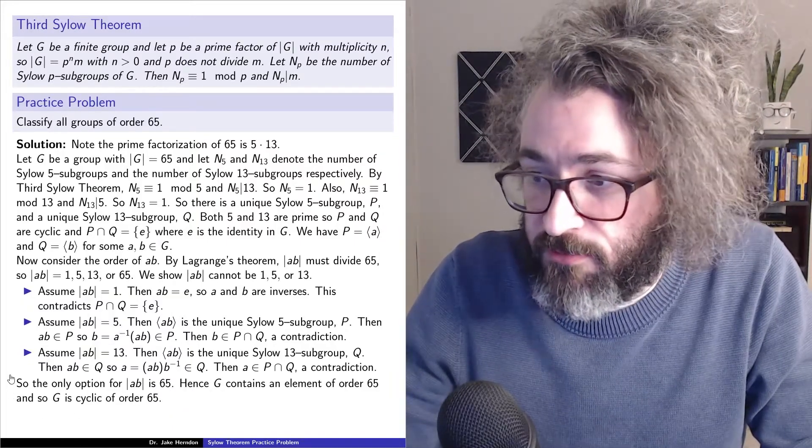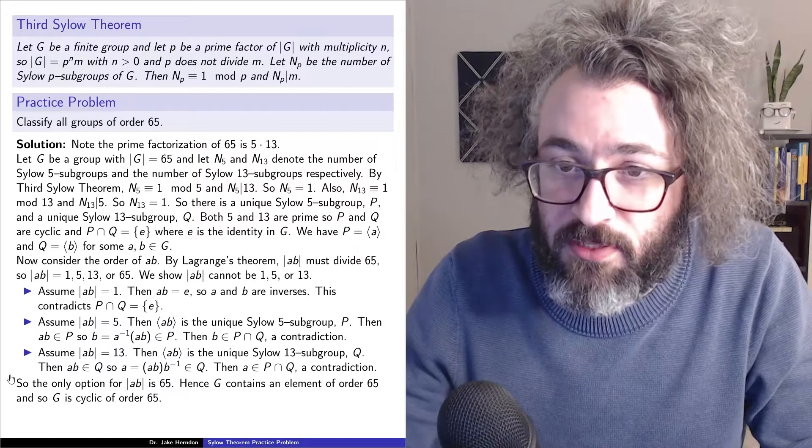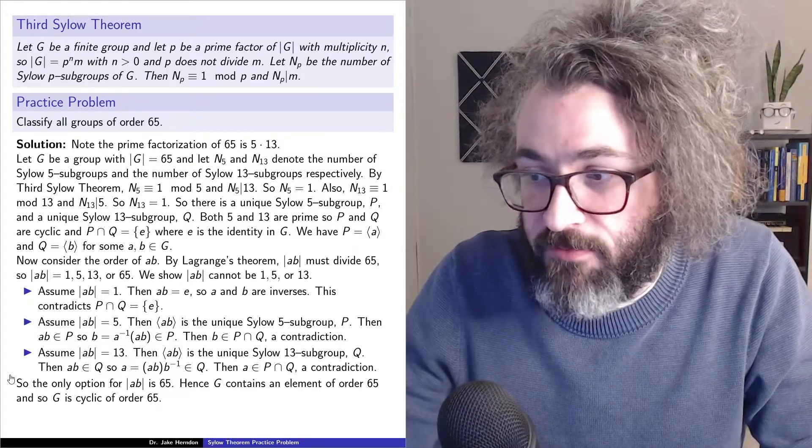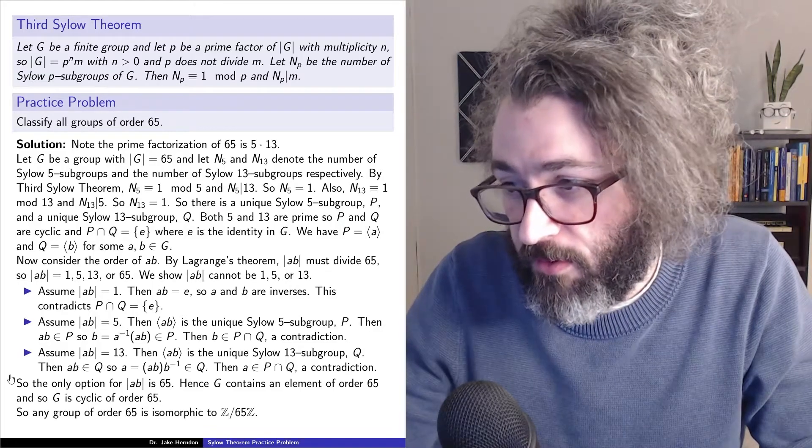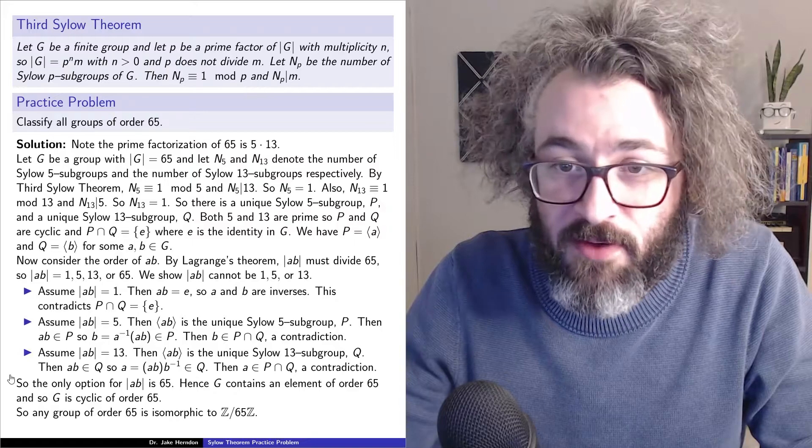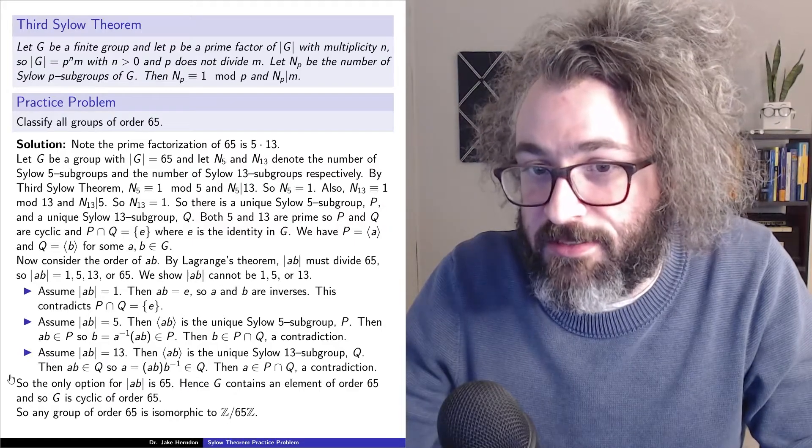Hence, G contains an element of order 65, and because the group has order 65, this means that the group has to be cyclic of order 65. So any group of order 65 is isomorphic to Z mod 65 Z.